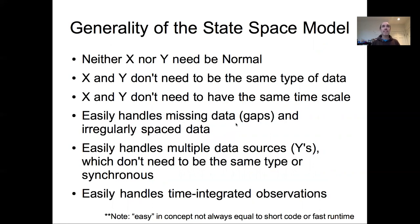Neither the observation error nor the process error need to be normal. They don't need to be the same type of data or the same temporal scale. We can handle gaps in irregularly spaced data, multiple data sources, and time-integrated observations. In the first part of this lecture, I want to particularly focus on handling irregularly spaced data.